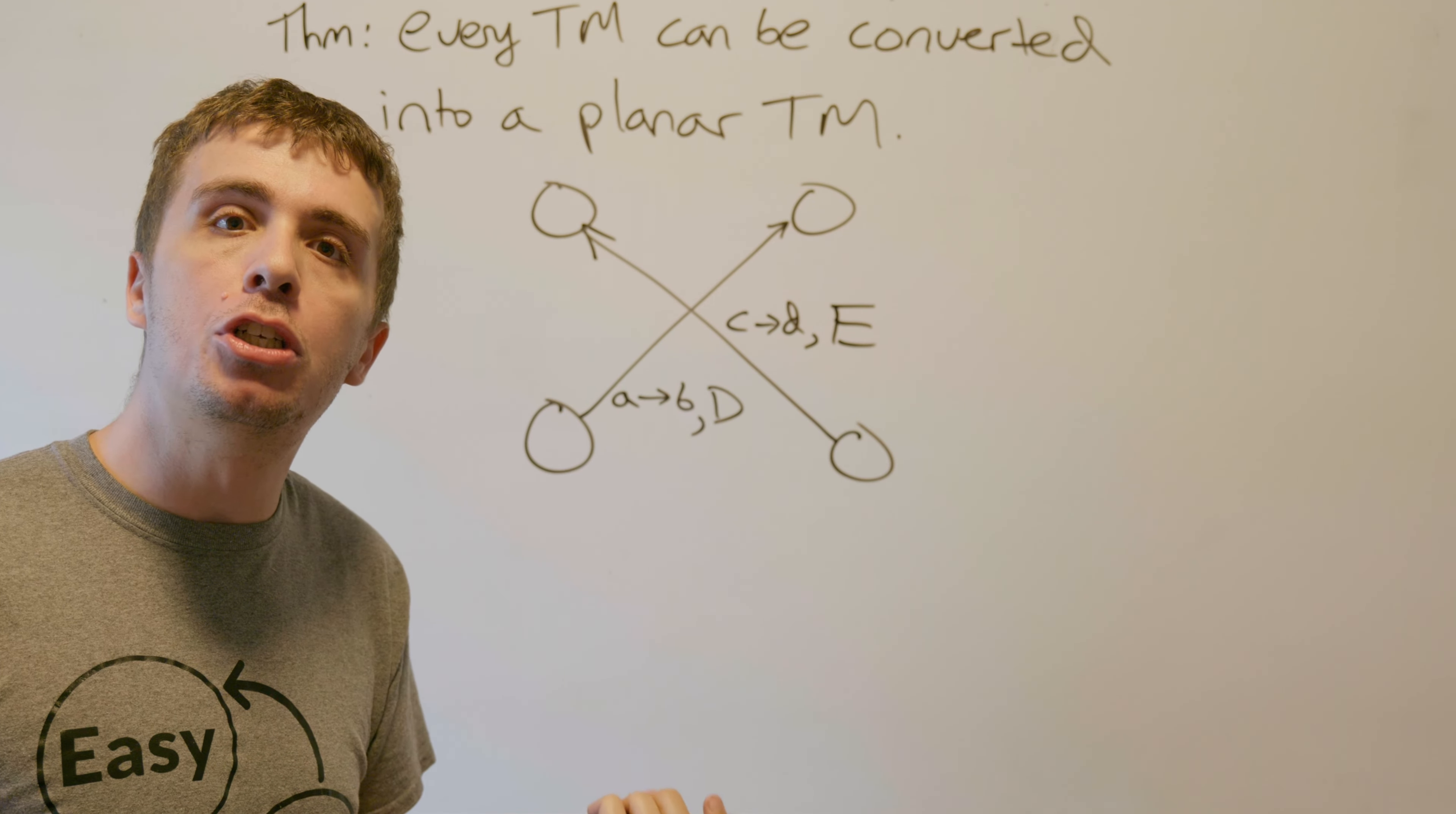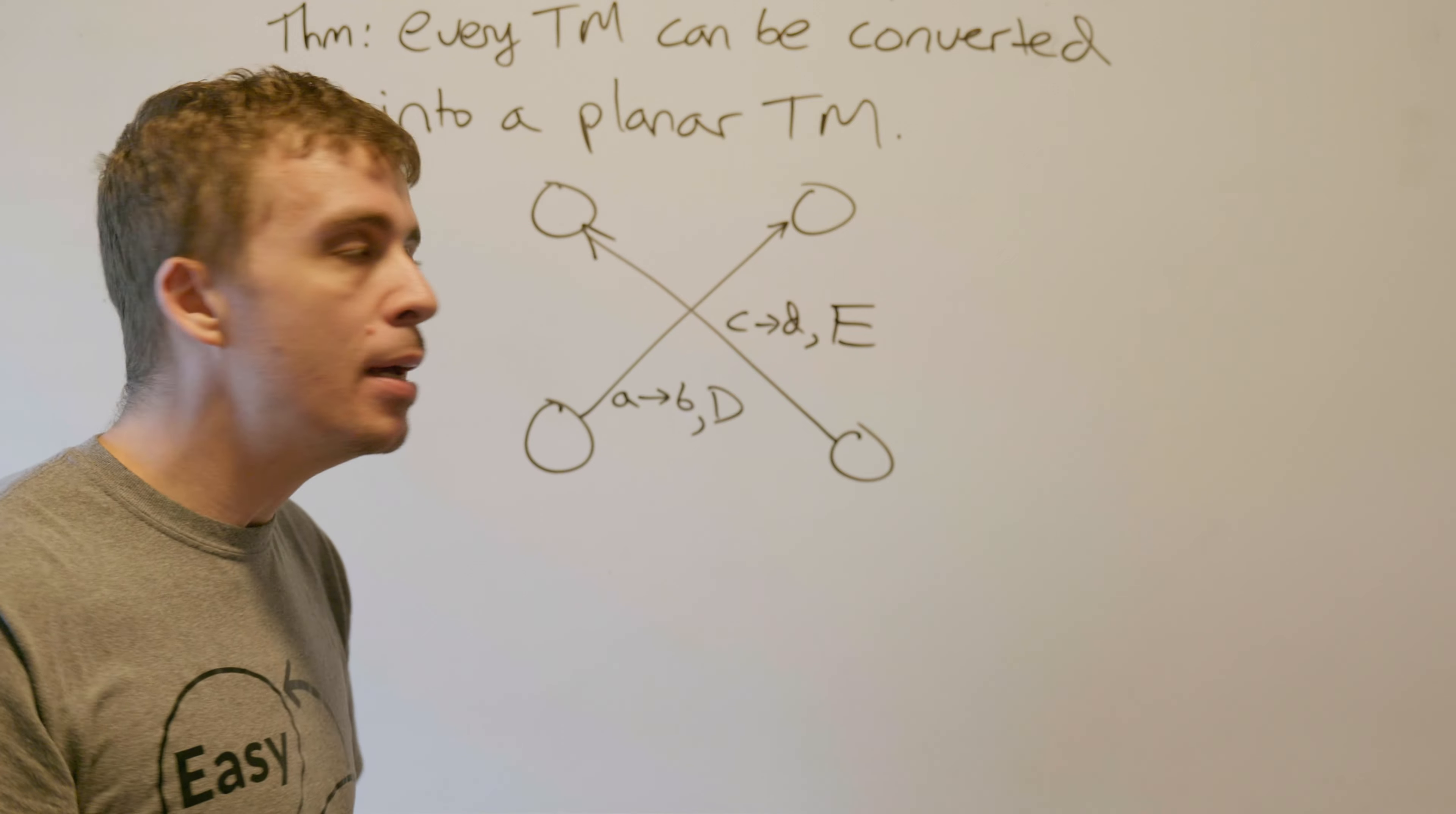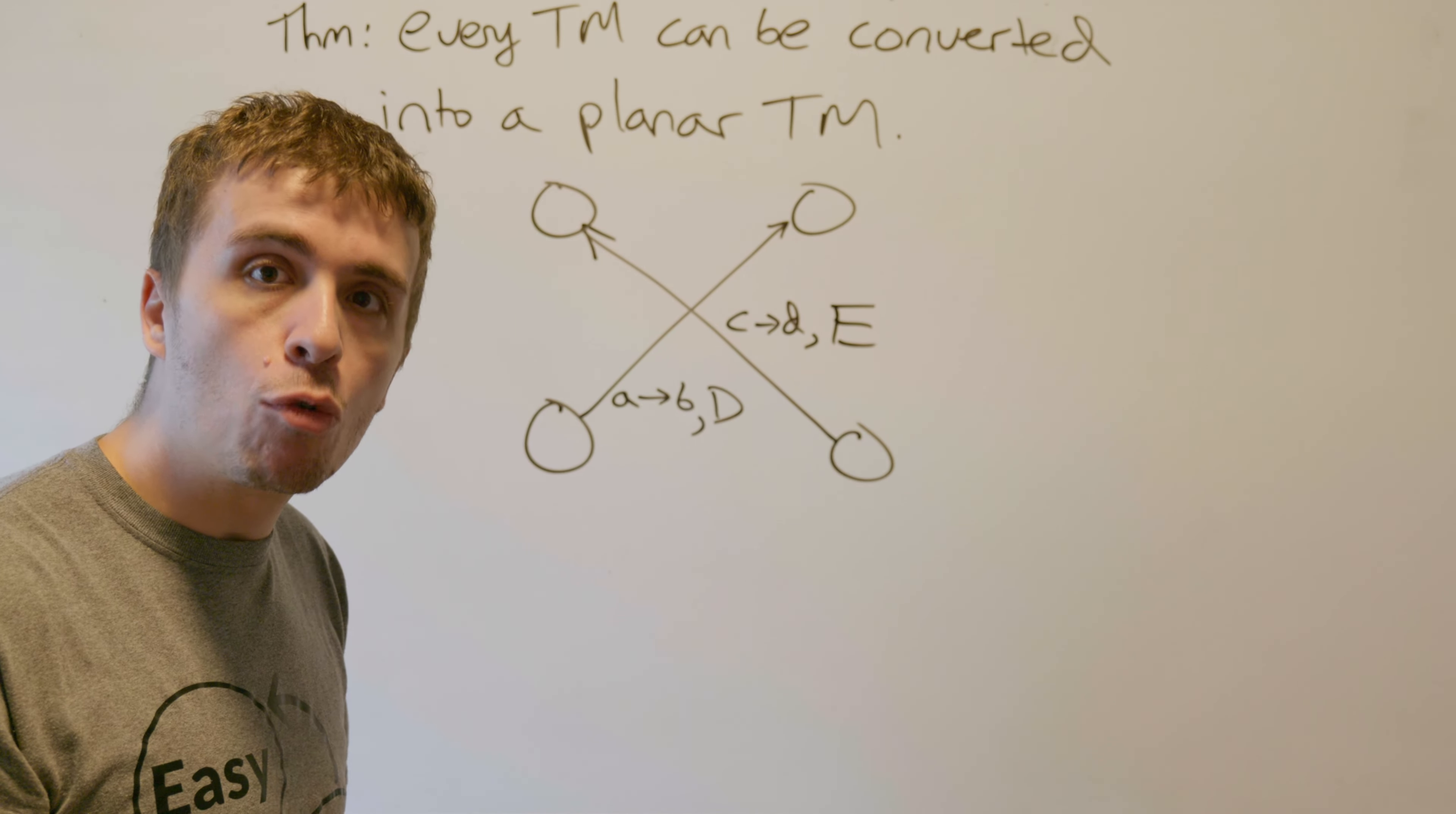But what we're going to do is change the Turing machine a little bit, so that we can make this crossing not appear here.